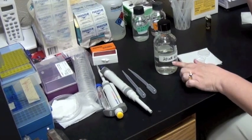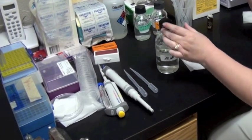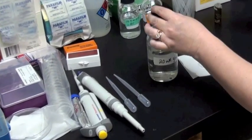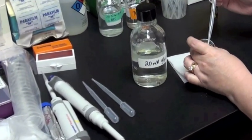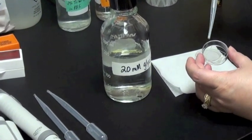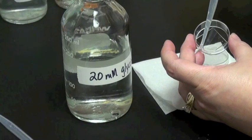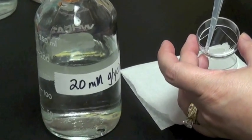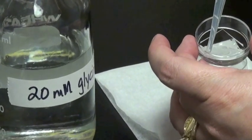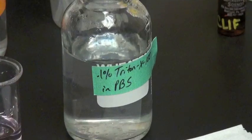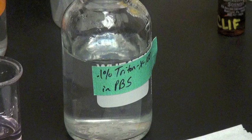Again, because I used an aldehyde fixation process, the lipids of my sample are intact. I want to use my sample for staining later, and in order to get the stains inside of my cell or tissue, I'm going to have to create holes in the membrane. One good way to do this is with a detergent. There are different types of detergents that you can use including Triton X-100 or saponin.